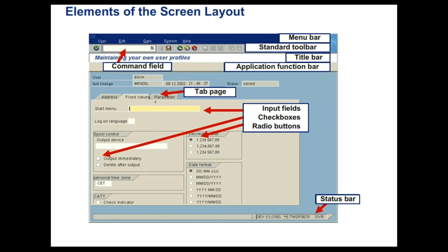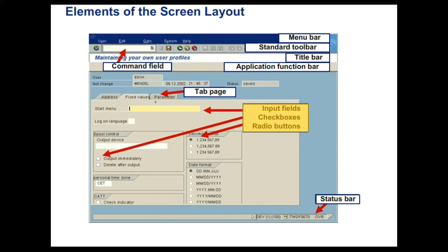Let us now understand the various elements that are available on the screen of the SAP system. You should already be familiar with the menu bar and the standard toolbar. Command field: you can enter the transaction code for a specific task directly into this field. Standard toolbar is present on every SAP screen. Application toolbar has buttons that you can use in the currently active application. Check boxes allow you to make several selections from a group of options. Radio buttons allow you to make a single selection from a group of options. You can look at multiple information screens through the tab element. Status bar reflects the current status of the system and warning errors.